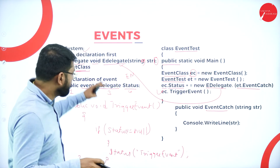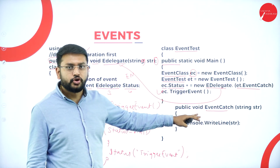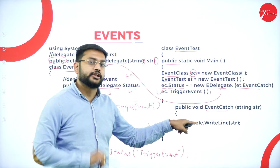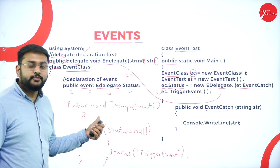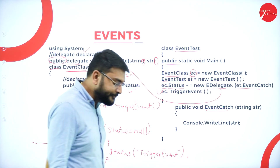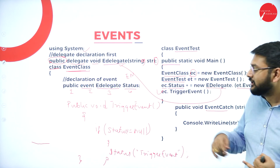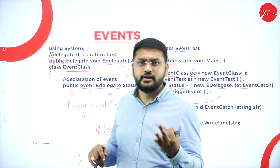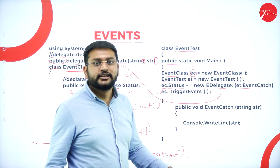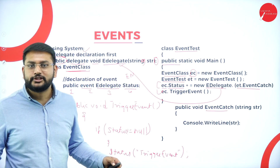To summarize, you need to remember three to four things: first, the declaration of the delegate at the top; second, the declaration of the trigger event; third, the event catch method; and fourth, creating objects for both classes. The most important line is the event subscription line. If you know these things, you are done with this topic.